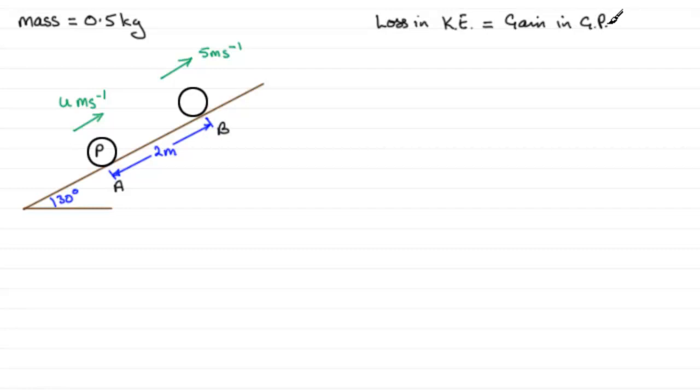When it comes to the loss in kinetic energy, knowing that kinetic energy is ½mv², it's got a lot more kinetic energy here than up there. It's going to be slowing down, so we start with the kinetic energy at A. That's ½ the mass, which is 0.5, times u².